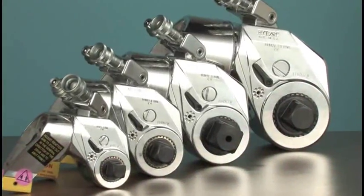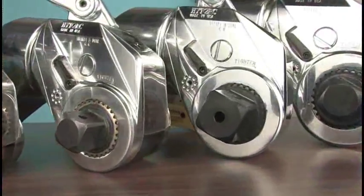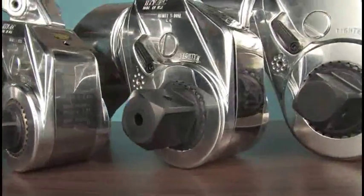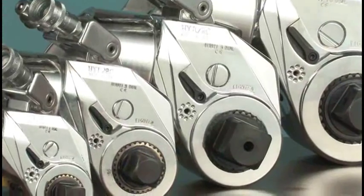Square drive wrenches come in various models with square drive sizes from one half inch to three and a half inches and power ranges from 100 to over 100,000 foot-pounds.